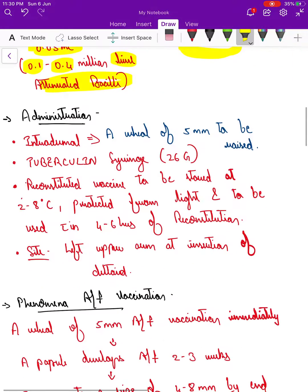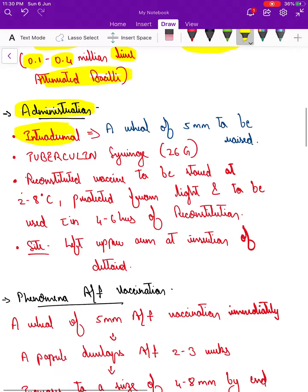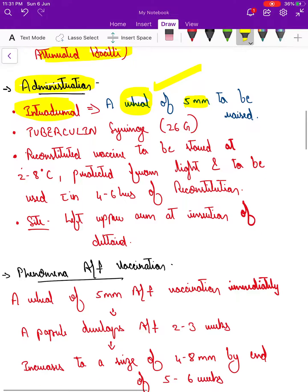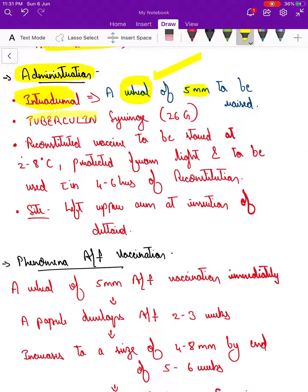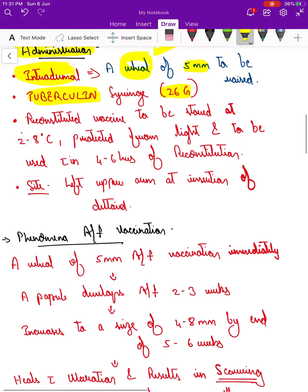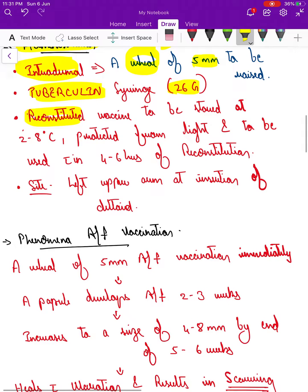How do we administer this vaccine? It's administered as an intradermal dose. Once we administer, what should we look for? We look for a wheal of up to 5 mm to be raised. This indicates the vaccination has been given appropriately. We use a 26-gauge tuberculin syringe. Once the vaccine has been reconstituted with normal saline, it has to be stored at 2 to 8 degrees Celsius, protected from light, and used within 4 to 6 hours of reconstitution because it doesn't have any preservatives.